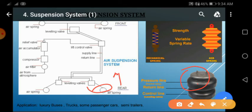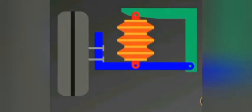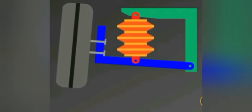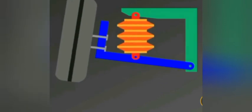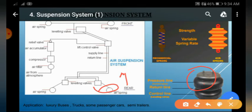The air suspension system is generally used in luxurious cars, high-class vehicles like Mercedes and Audi. It is also used in some trucks and some passenger cars. I hope you understand the working of air suspension system.